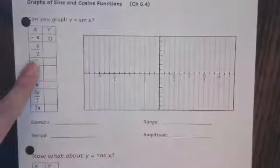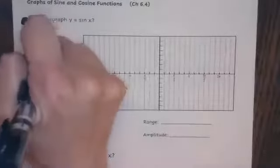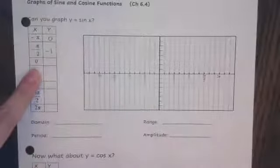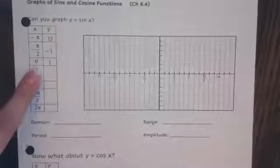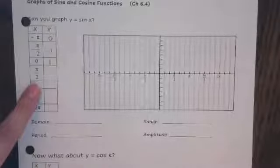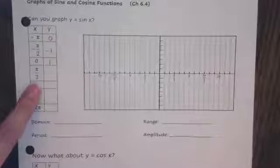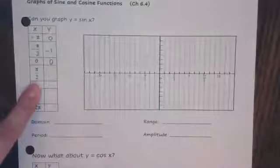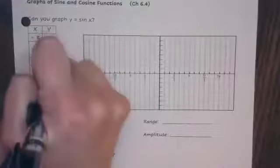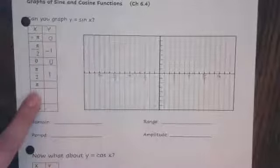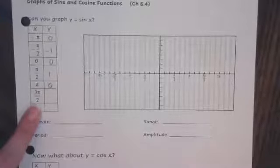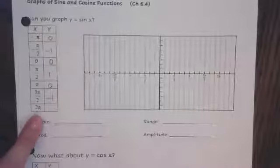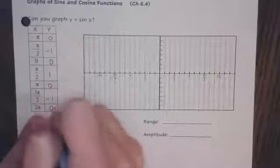At negative pi over two, our y value is negative one. At zero, it is zero. At pi over two, our y value is one. At pi, our y value is zero. At three pi over two, our y value is negative one. And at two pi, our y value is zero.